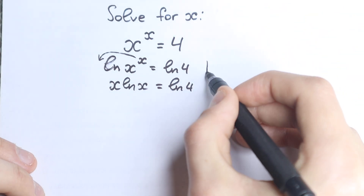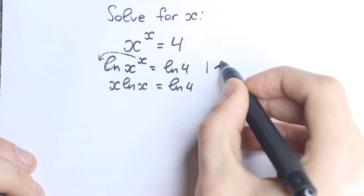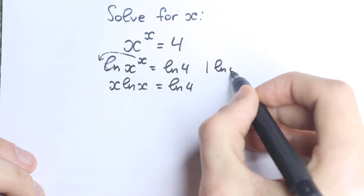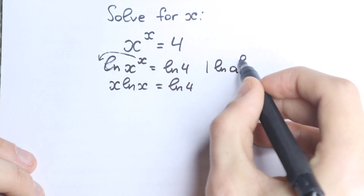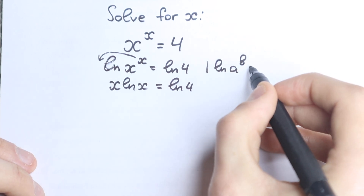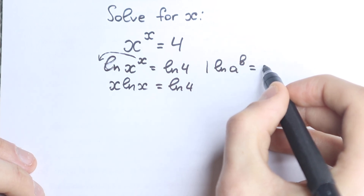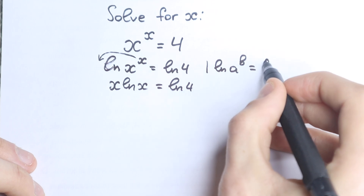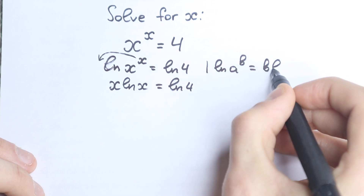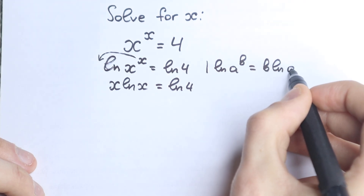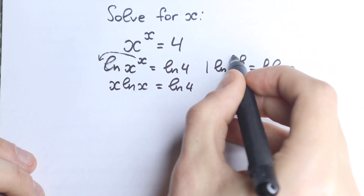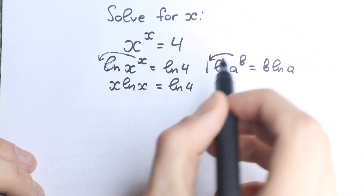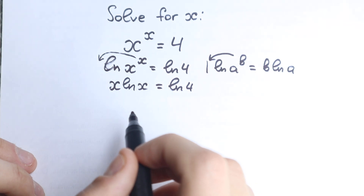Before moving on, I want to write this rule and I want you to understand and learn it: if we have natural log of a to the power b, this is equal to b times natural log a — so this b jumps right here, and it's really great.